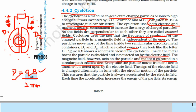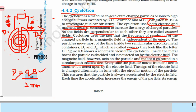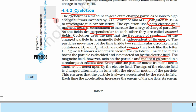This process continues until the radius of the path becomes equal to the radius of the D, at which point the particle exits the cyclotron. This is the process happening inside the cyclotron.